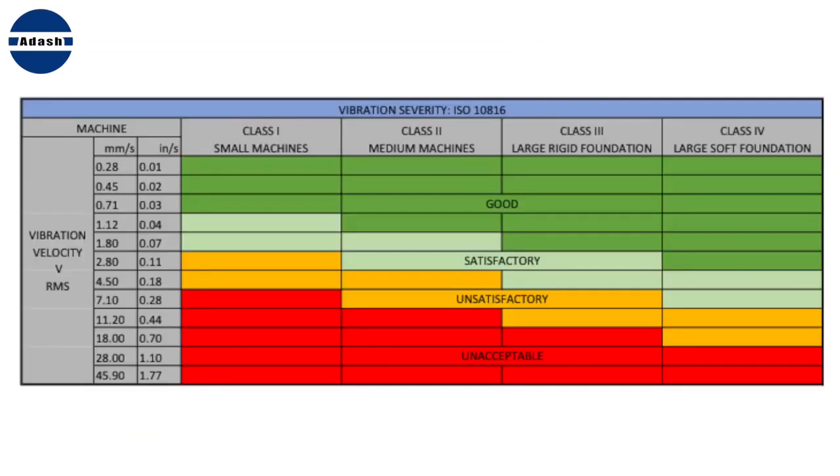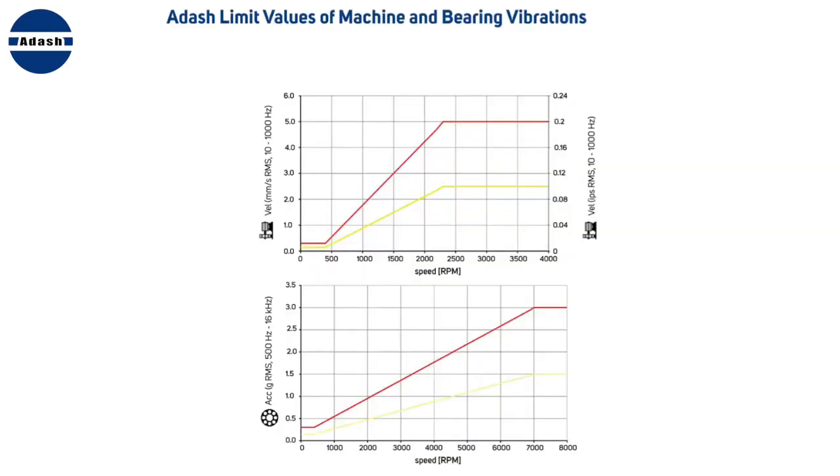The first question is whether the values are low or high. You can use the ISO 10816 standard where you find the table with velocity limit values. Or you can use the Adash limits table. You can find them in Vibrio manual. You can see that Adash limits depends on the speed. For example, if your machine speed is 1500 rpm, then the alarm limit, the red line, is 3 mm per second for velocity and 0.75 g for acceleration.